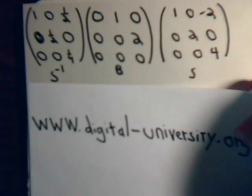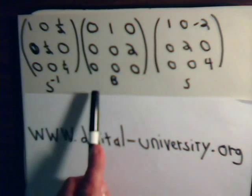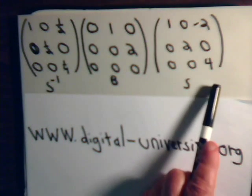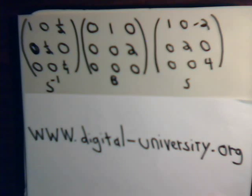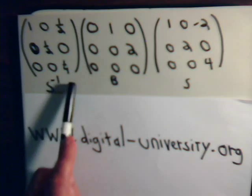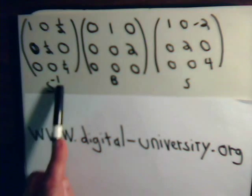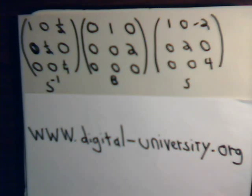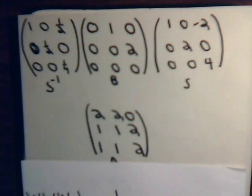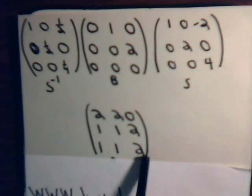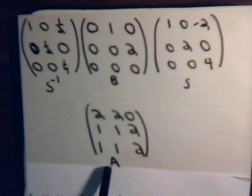Here we have a matrix we call B. On the right-hand side is another matrix we call S, and this is non-singular so it has an inverse on the left side. We are multiplying matrix B by matrix S and on the left multiplying it by the inverse of that matrix. If you go ahead and do all of those multiplication steps, what you end up with is this matrix right here.